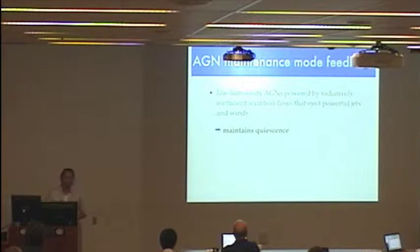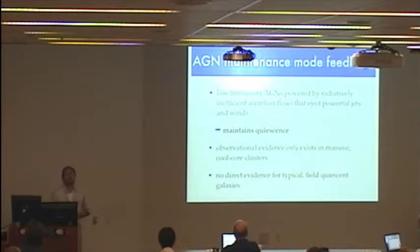So AGN maintenance mode feedback is needed to keep quiescent galaxies quiescent. And while there's evidence for AGN maintenance mode feedback in the cores of clusters, at the moment there is no evidence for AGN maintenance mode feedback in more typical quiescent galaxies in the field, which make up the vast majority of the quiescent population.